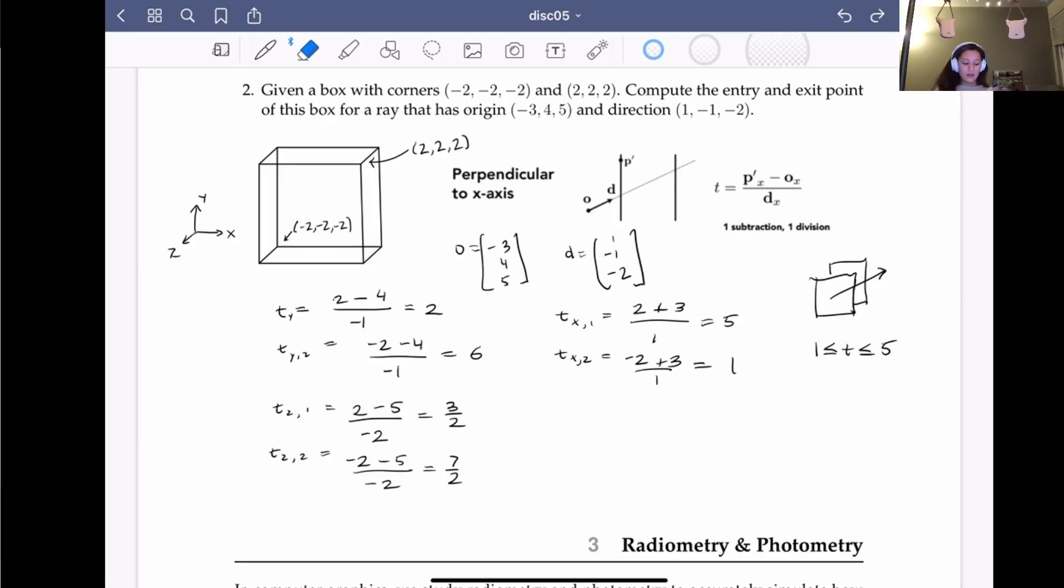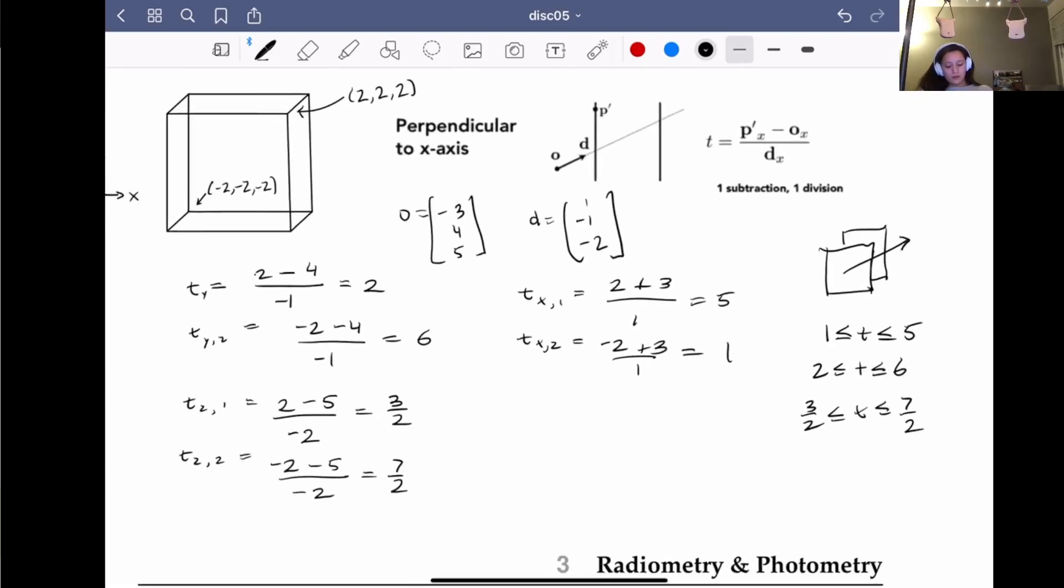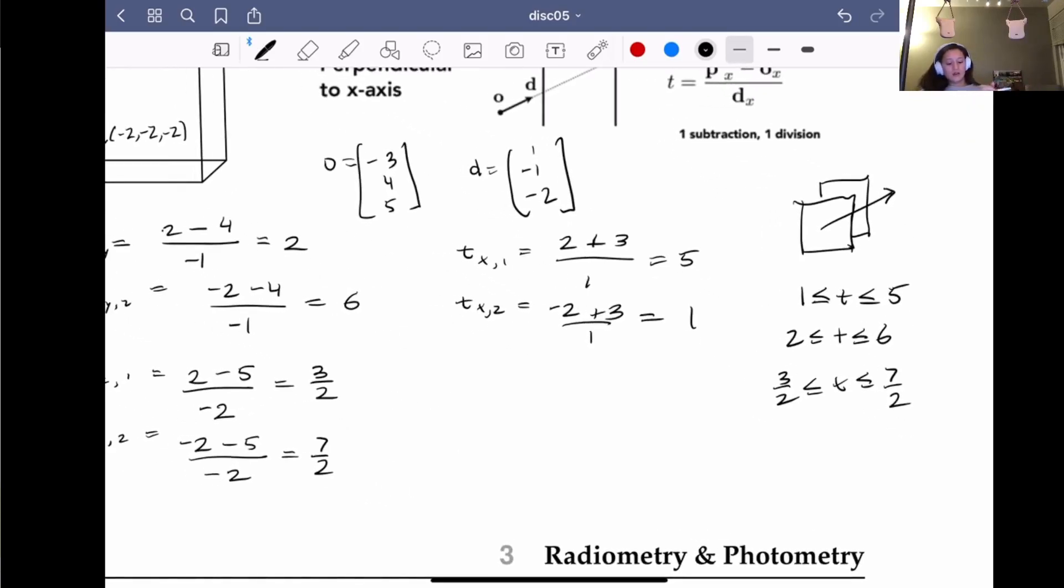But that's only for one of the axes. We have to look at all three of them. So what we want is the interval where t is between all of these values. So we want t also to be between 2 and 6, and 3 over 2 and 7 over 2.